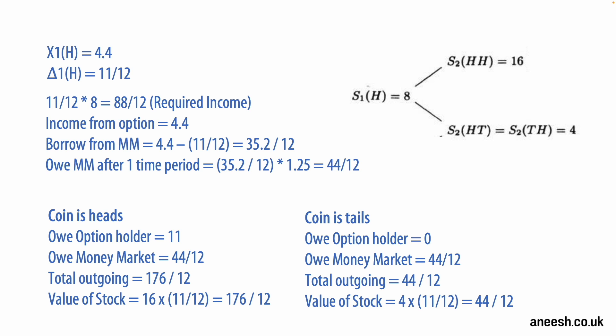So our calculation has proved to us that a delta of 11 over 12 will enable us to perfectly hedge the exposure of the option given the potential payouts and interest rate. This calculation is performed given the first theoretical coin flip as heads where the stock price starts at 8 and can go up to 16 or down to 4.